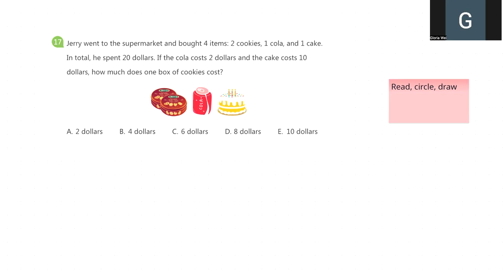Jerry went to the supermarket and bought 4 items: 2 cookies, 1 cola, and 1 cake. In total, he spent $20. If the cola cost $2 and the cake cost $10, how much does one box of cookies cost?